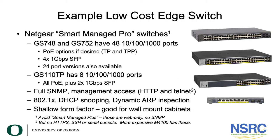The slide shows some examples of low-cost edge switches that we've had good experience with. Netgear has some smart managed pro switches — note carefully these are pro switches. Confusingly, Netgear also sells smart managed plus switches, which are not as manageable as the pro switches as they're only web interface and don't have SNMP. For example, the GS748 and the GS752 have 48 10/100/1000 ports and can give you power over Ethernet options if you need. They have four 1 gigabit SFP ports for uplinks and also come in 24-port versions.